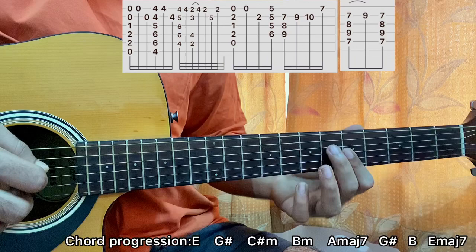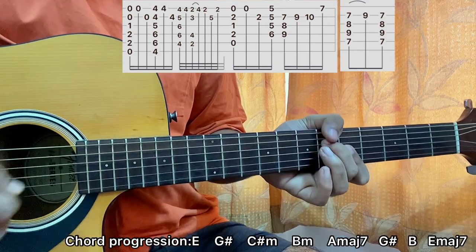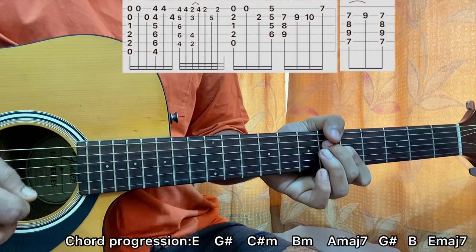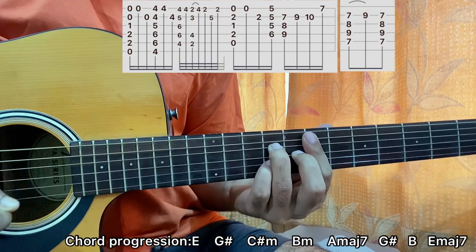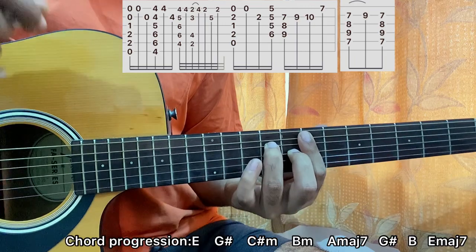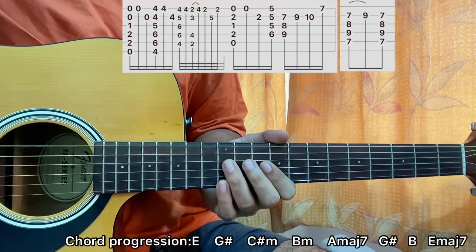Then let's go to that A minor with G sharp on the bass, and then back to the same thing: B major, then E major seven. So that's the second part.